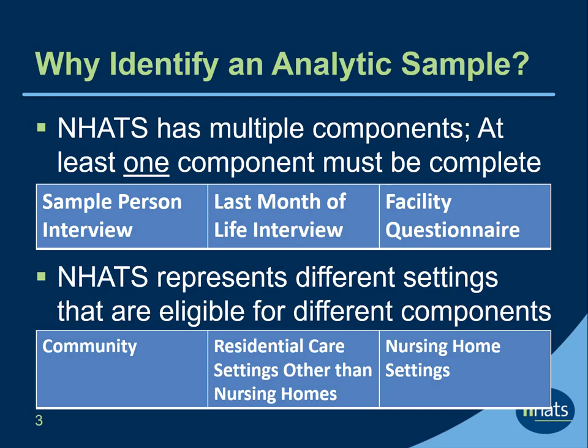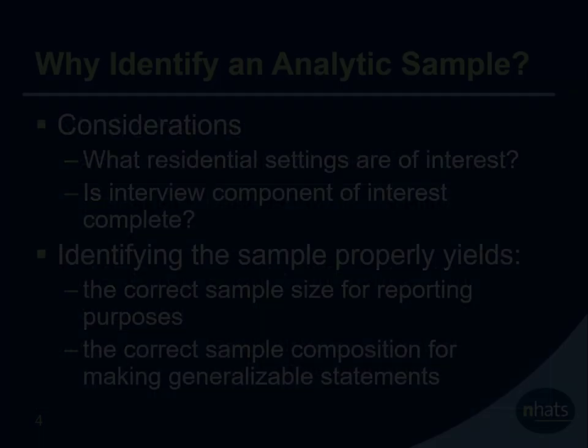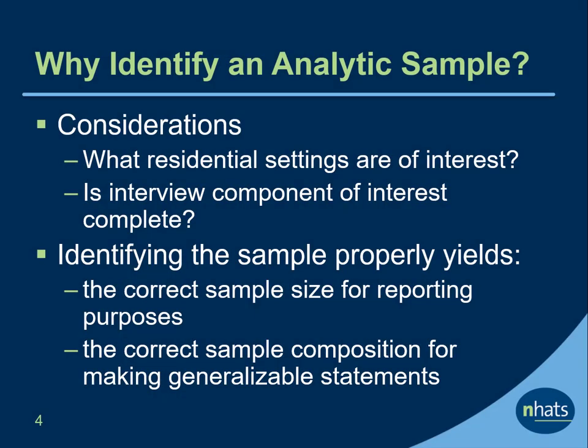NHATS has multiple types of interviews or components. In order to be considered a respondent to NHATS, at least one component must be complete. NHATS also represents sample persons, or SPs, in different types of settings—the traditional community setting, nursing home settings, and residential care settings other than nursing home settings. Depending on the type of setting and the round, SPs may be eligible for different components. Because the NHATS sample person file combines individuals from different types of settings with different completed components, most of the time researchers will want to identify the subset of cases that meet their analytic needs.